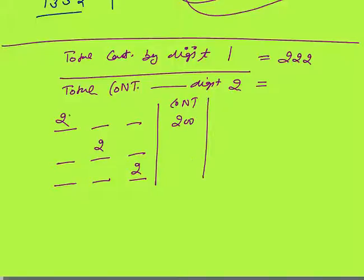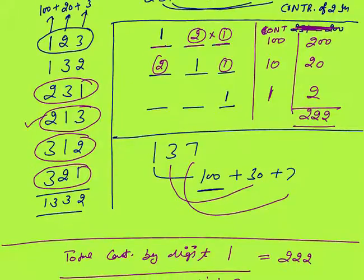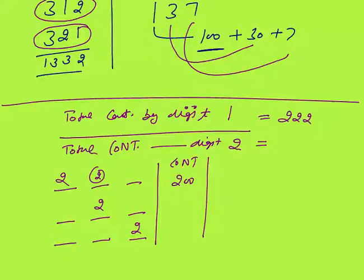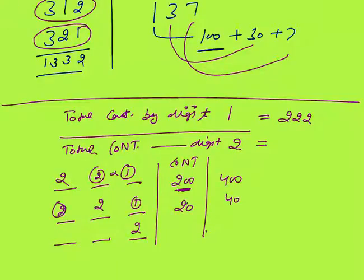When 2 comes at the hundreds place its contribution is 200. Numbers like 231 and 213 — the contribution of 2 is 200 in both, so 400 total. When 2 comes at the tens place, contribution is 20, and there are 2 numbers, so 40. When 2 comes at the units place, contribution is 2, and 2 numbers are there, so 4. Total contribution by digit 2 is 400 + 40 + 4 = 444.